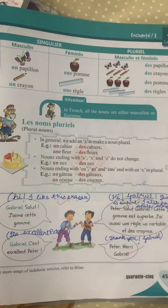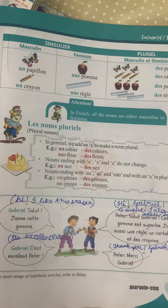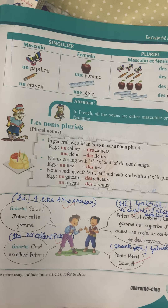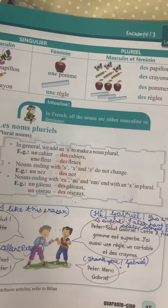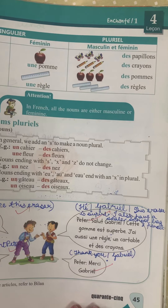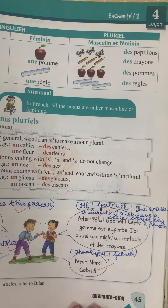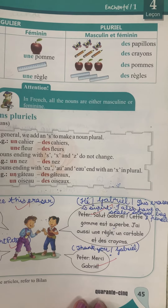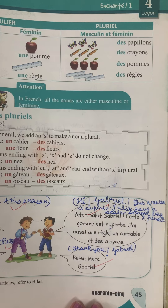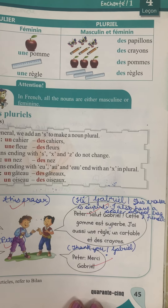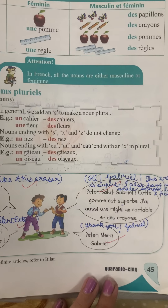Now here is a conversation. Gabriel: Salut, j'aime cette gomme — Hi, I like this eraser. Peter: C'est excellent, Peter. Gabriel: Salut Gabriel, cette gomme est superbe. J'ai aussi une règle, un cartable et des crayons — I also have a scale, a schoolbag, and pencils. Peter: Hai Gabriel, this eraser is superb. I also have scales, a schoolbag, and a pencil. Peter: Merci Gabriel — Thank you Gabriel.